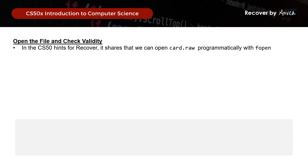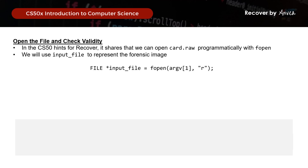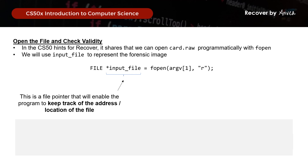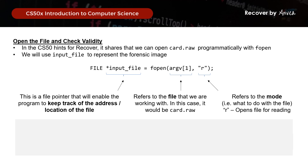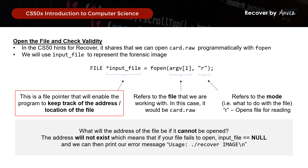In the CS50 hints for Recover, it states that we can use fopen to open card.raw programmatically. We will use input_file to represent this file. The syntax will be: FILE *input_file = fopen(argv[1], "r"). input_file is the file pointer that enables the program to keep track of the address of the file. argv[1] refers to card.raw, and the "r" refers to the read mode. If the file cannot be opened, the address will not exist, meaning input_file will return a null value — that is how you detect if the file is invalid — and then you can print the error message.